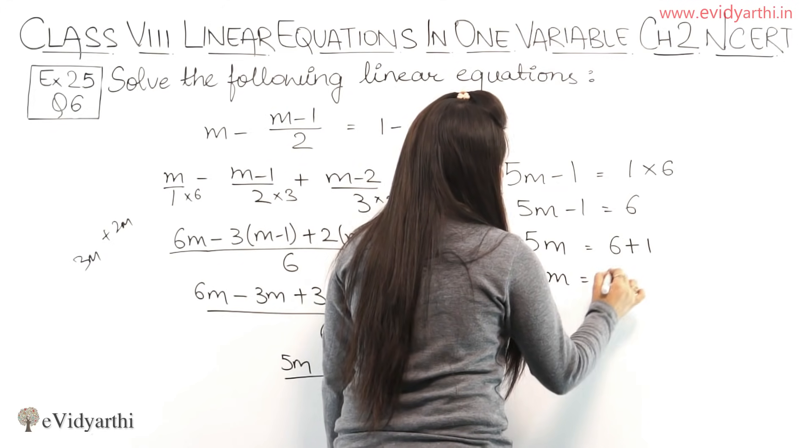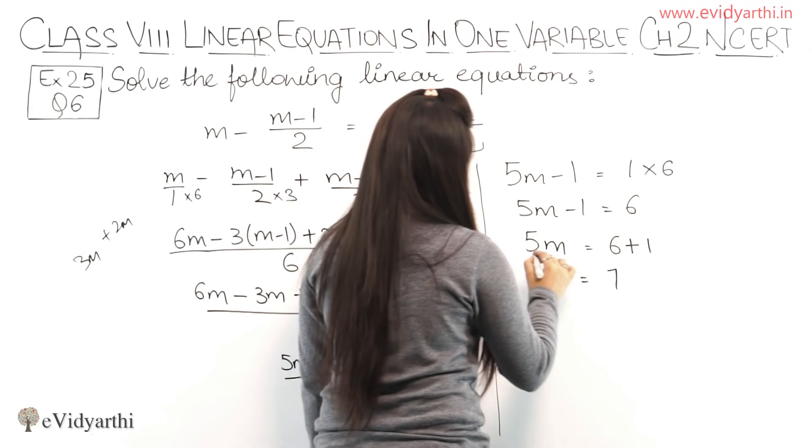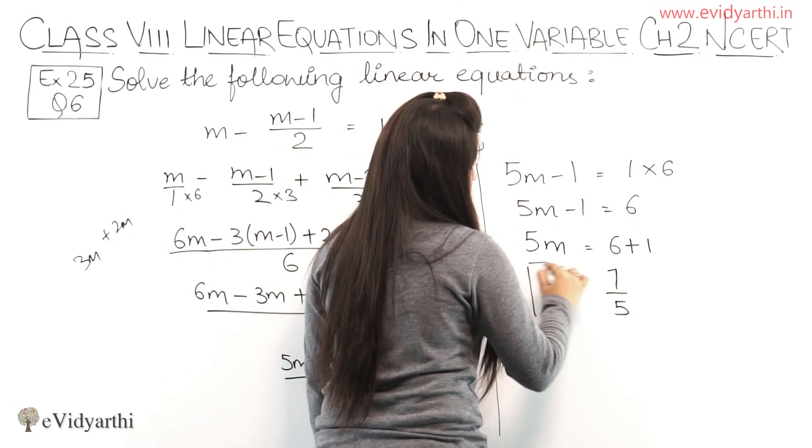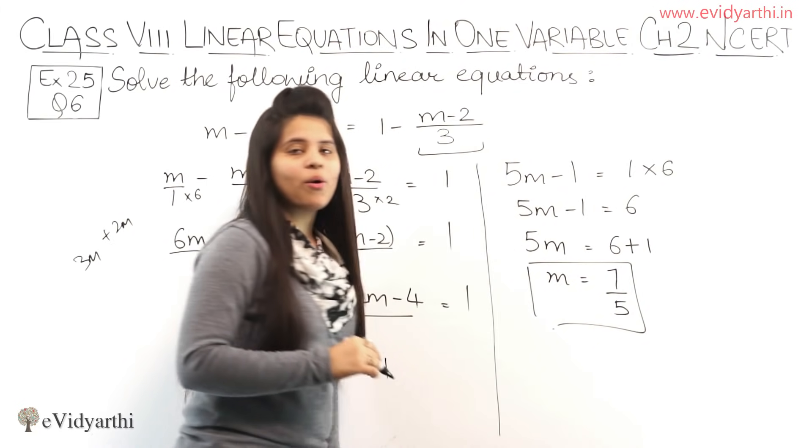Now M will be equal to 6 plus 1 is 7, and 5 is multiplying here so it will divide there. So M equals 7/5.